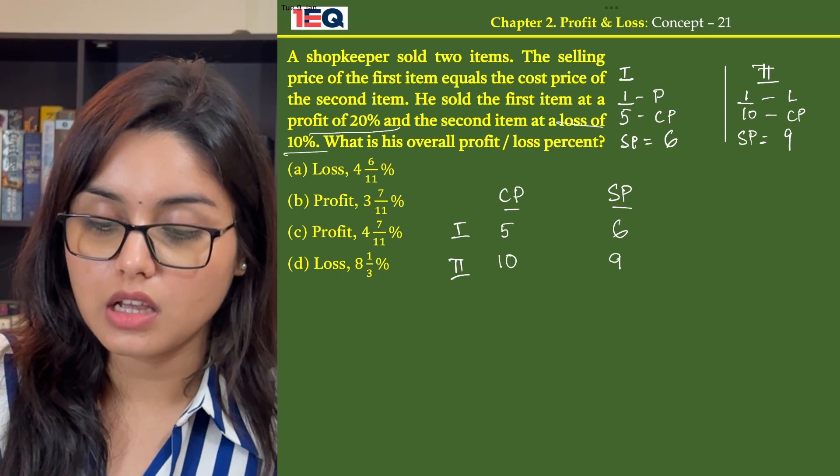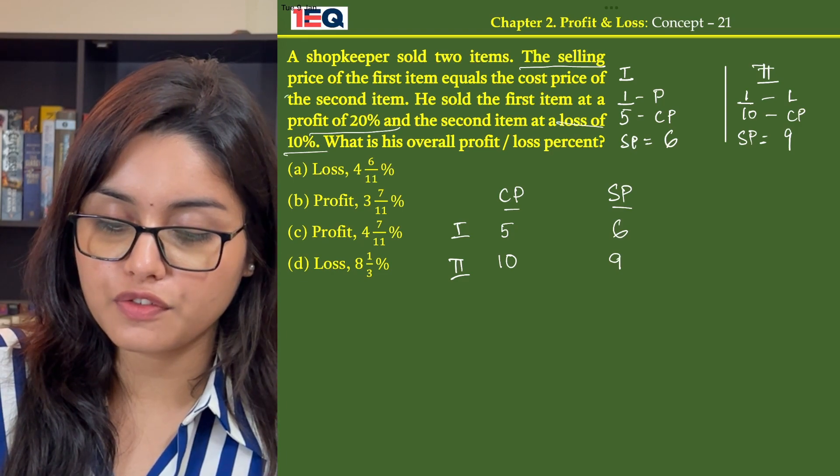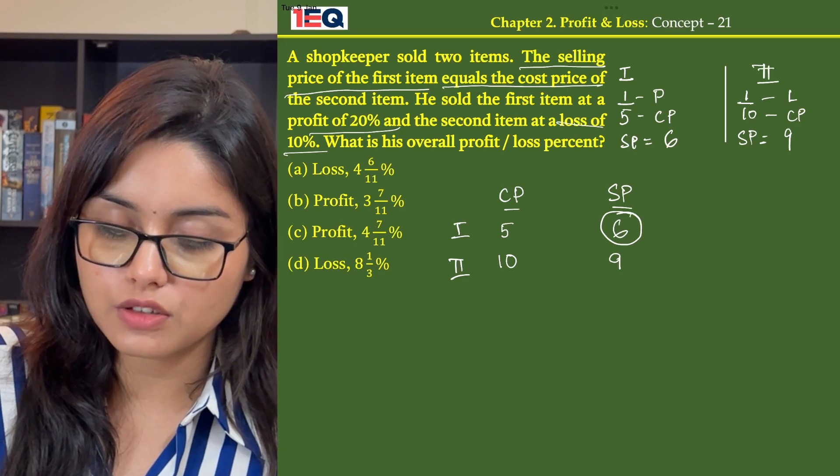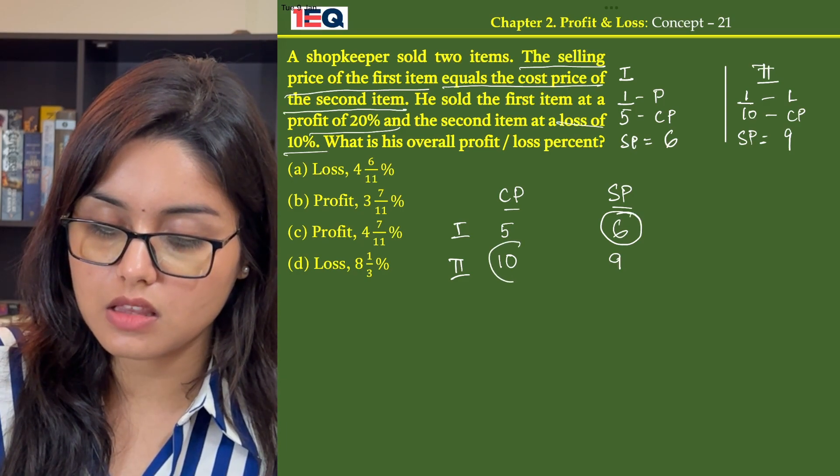Now according to the question, the selling price of the first item, that means this number, equals to the cost price of the second item, that means this number.